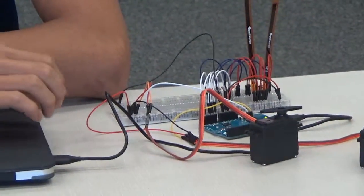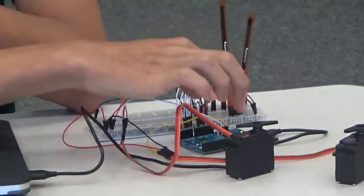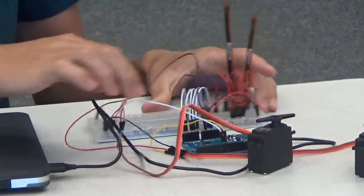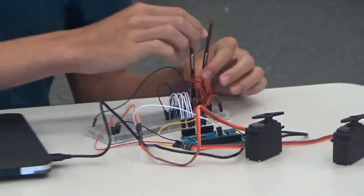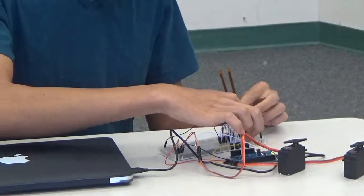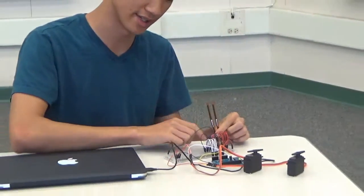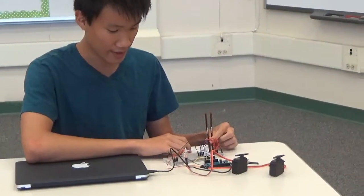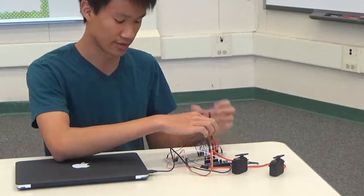This works by the circuitry where the Arduino sends 5 volts towards each of the flex sensors.